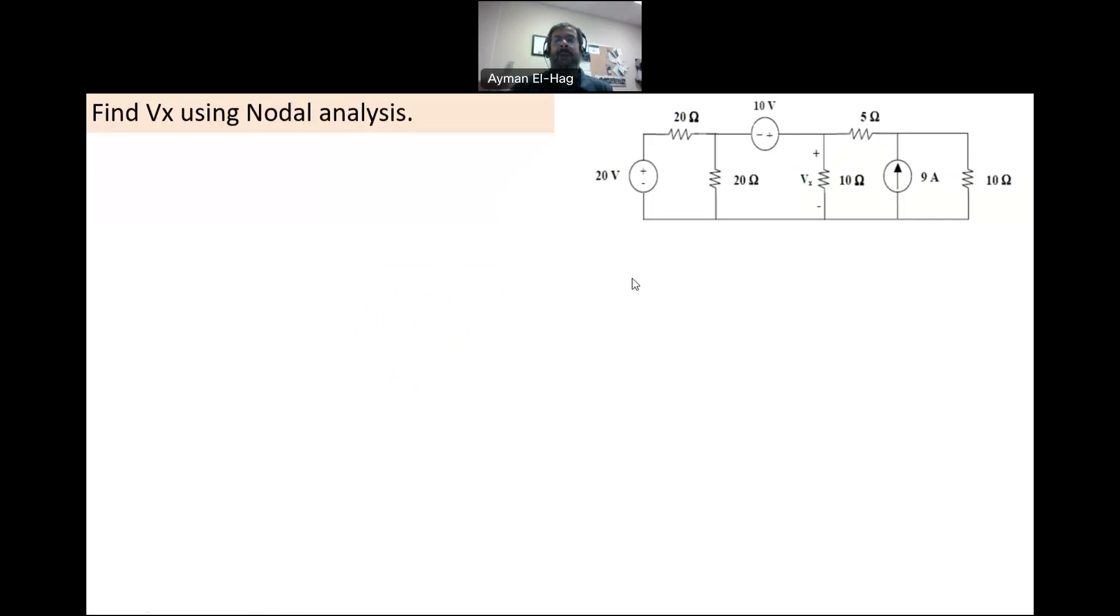So the question asks us to find what is VX using nodal analysis. Now in nodal analysis, we don't worry at the beginning about what is the requirement of the question. What we worry about is to find the node voltages, the voltage at each node. Once we are done with this, then we can look at what the requirements are and find it. The trick here in nodal analysis: once I know the node voltages, then I can find any quantity in the circuit. So how to proceed? First we set our reference. So this is our reference here, V equal to zero. Now the reference was not given in the question, but it's preferred to select the negative of the voltage supply to be your reference.